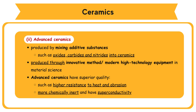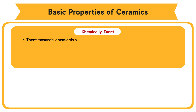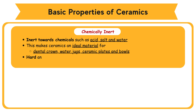Basic properties of ceramics. Chemically inert — ceramics are inert towards chemicals such as acid, salt, and water. This makes ceramics an ideal material for dental crowns, water jugs, ceramic plates, and bowls.